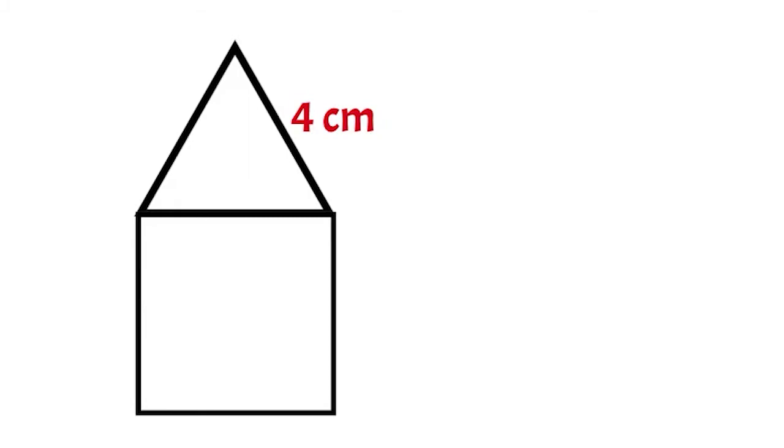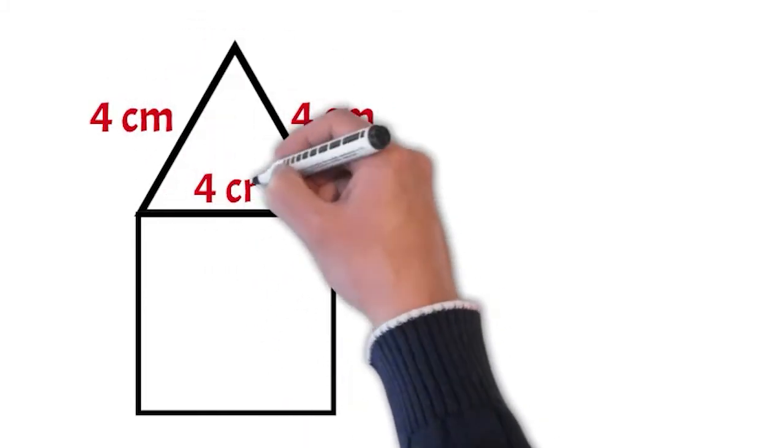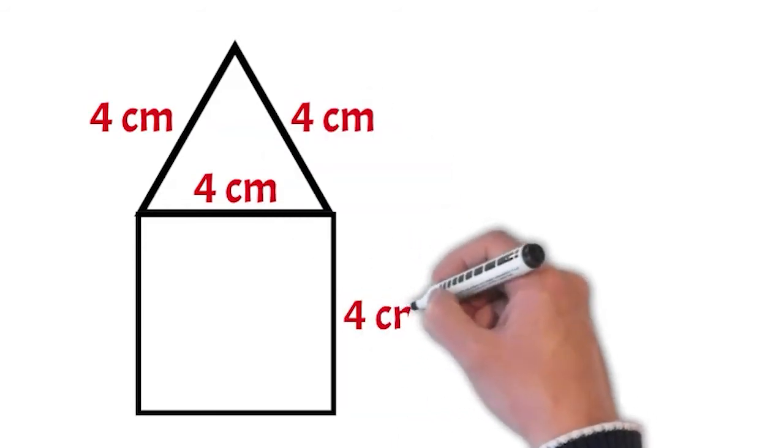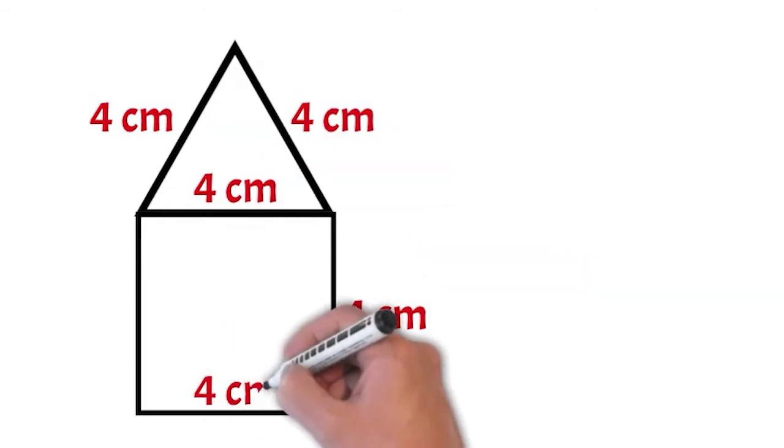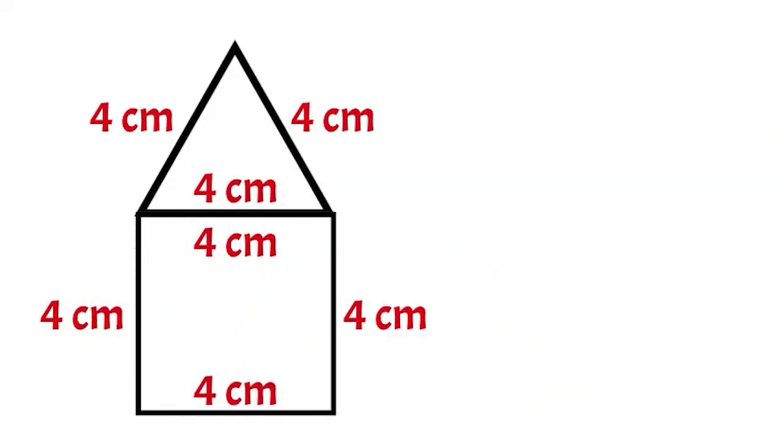I'm just going to go ahead and label all the side lengths so we can find the perimeter a little more easily. Since the bottom of the house is a square and the bottom edge of the triangle is four centimeters long, we know that all the other sides of the square are four centimeters long too.